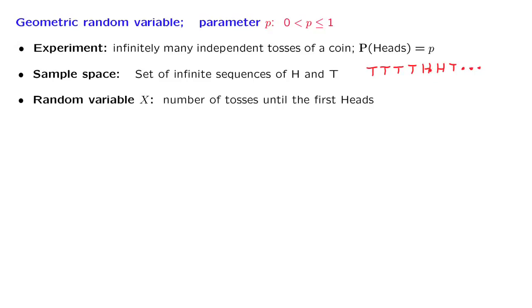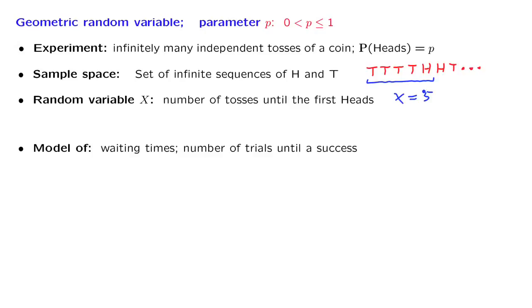We're interested in the random variable X, which is the number of tosses until the first heads. So if our sequence looked like this, our random variable would be taking a value of 5. A random variable of this kind appears in many applications and many real-world contexts. In general, it models situations where we're waiting for something to happen — we keep doing trials, and each trial can result either in success or failure.